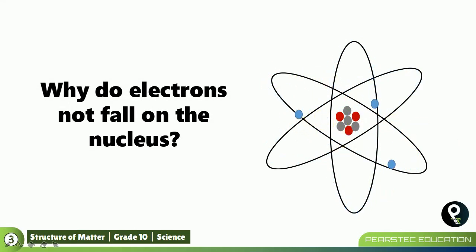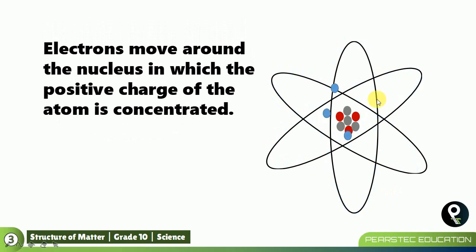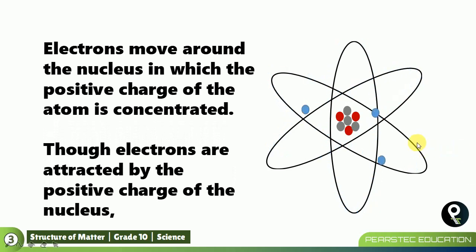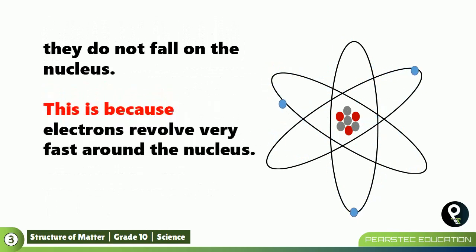These electrons are moving around one path in the planetary model, but the nucleus is at the center. Electrons move around the nucleus where the positive charge of the atom is concentrated. Although electrons carry negative charge and are attracted by the positive charge of the nucleus, they do not fall on the nucleus because electrons revolve very, very fast around it. If they fell onto the nucleus, something else would happen to everything made out of atoms.